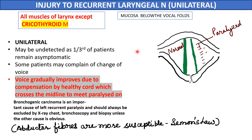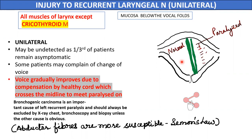This means the vocal cords cannot move to the abducted position. In unilateral recurrent laryngeal nerve injury — most commonly the left side is involved — the paralyzed vocal cord lies in the median or paramedian position and cannot abduct. Normal respiration is still possible as the normal vocal cord can move to the abducted position. Voice also gradually improves as the normal vocal cord during phonation crosses the midline to meet the paralyzed cord, and phonation becomes possible.